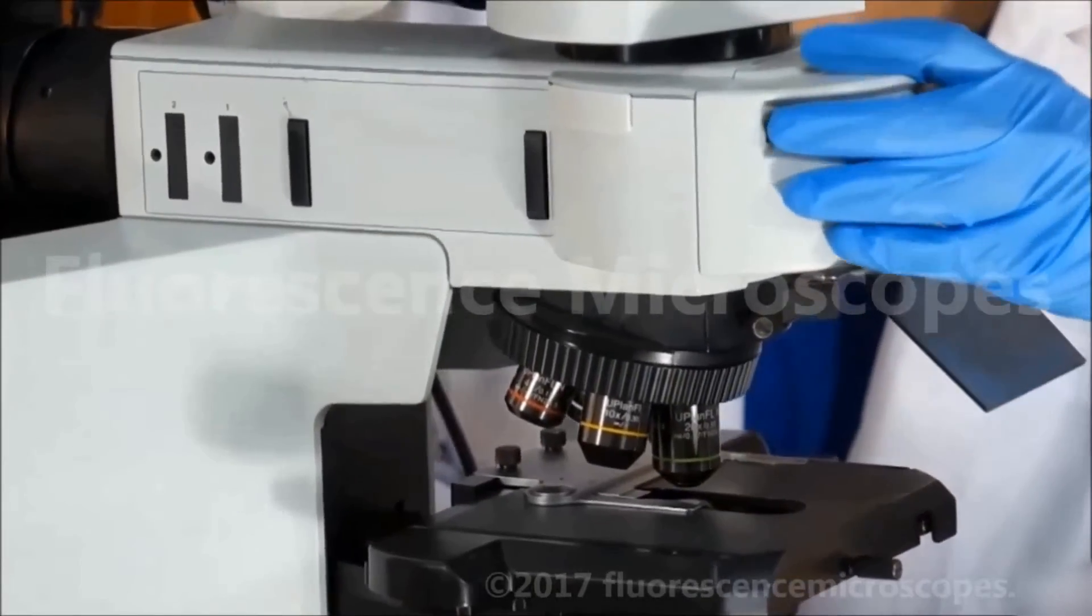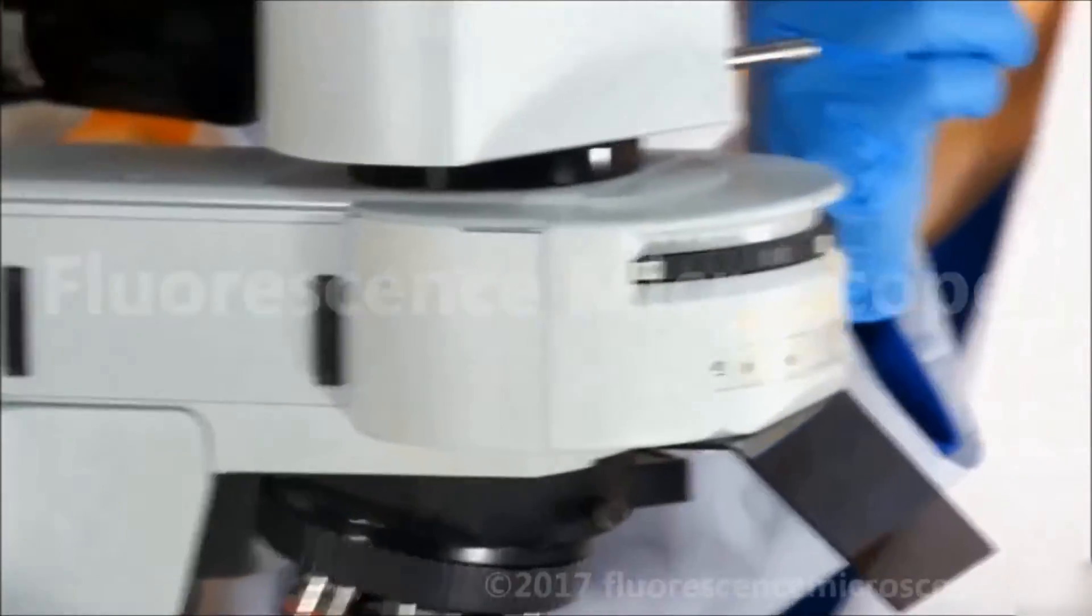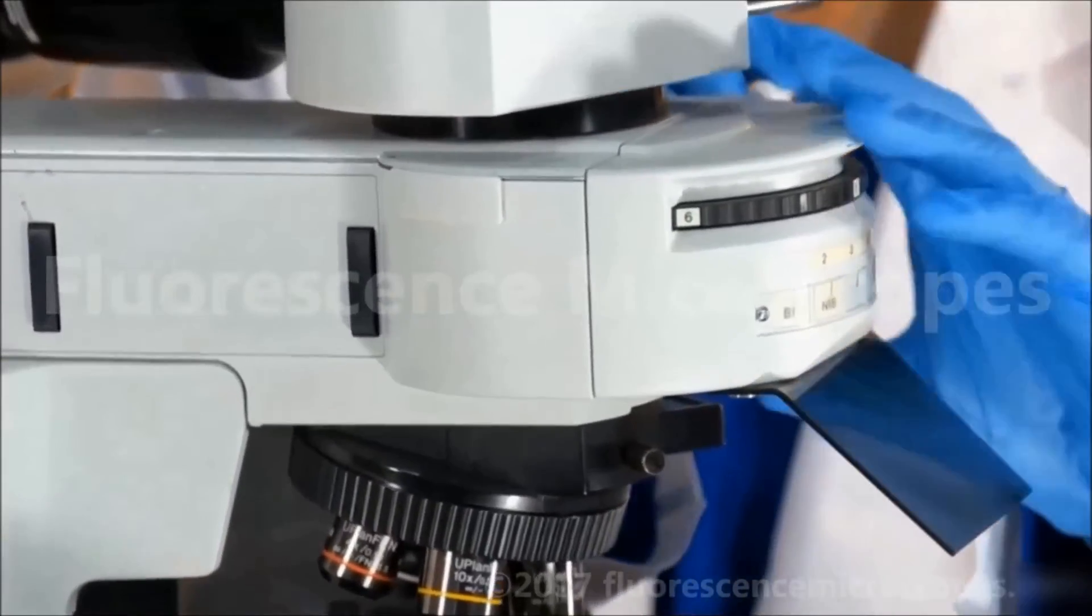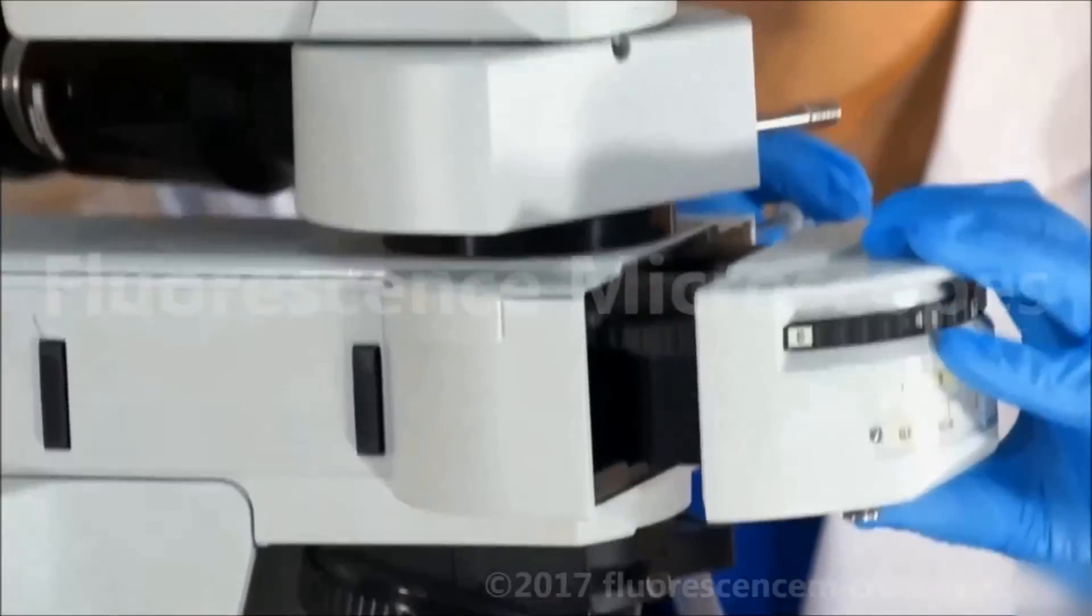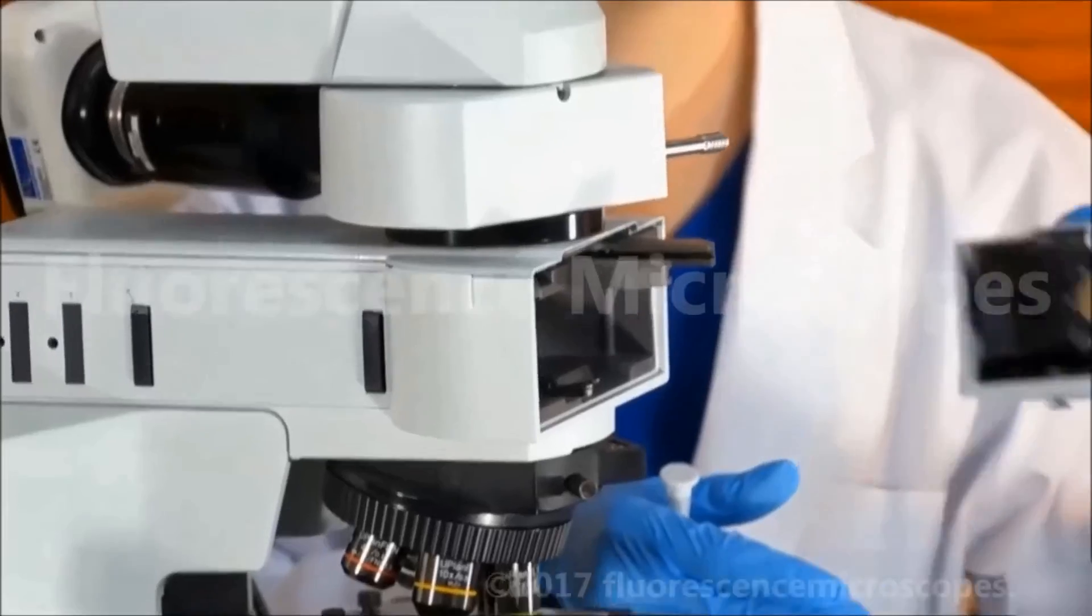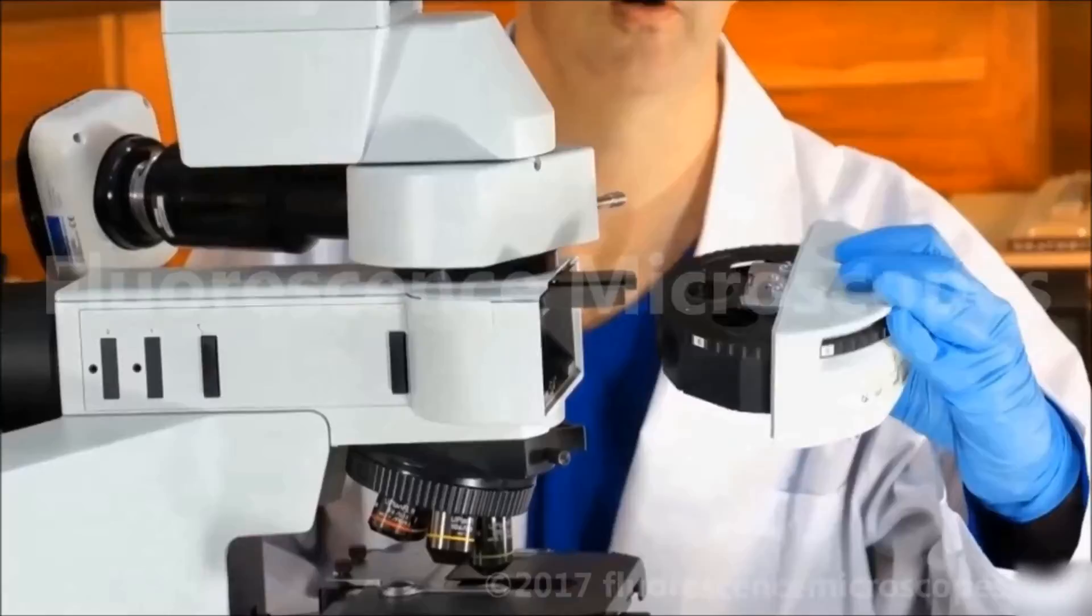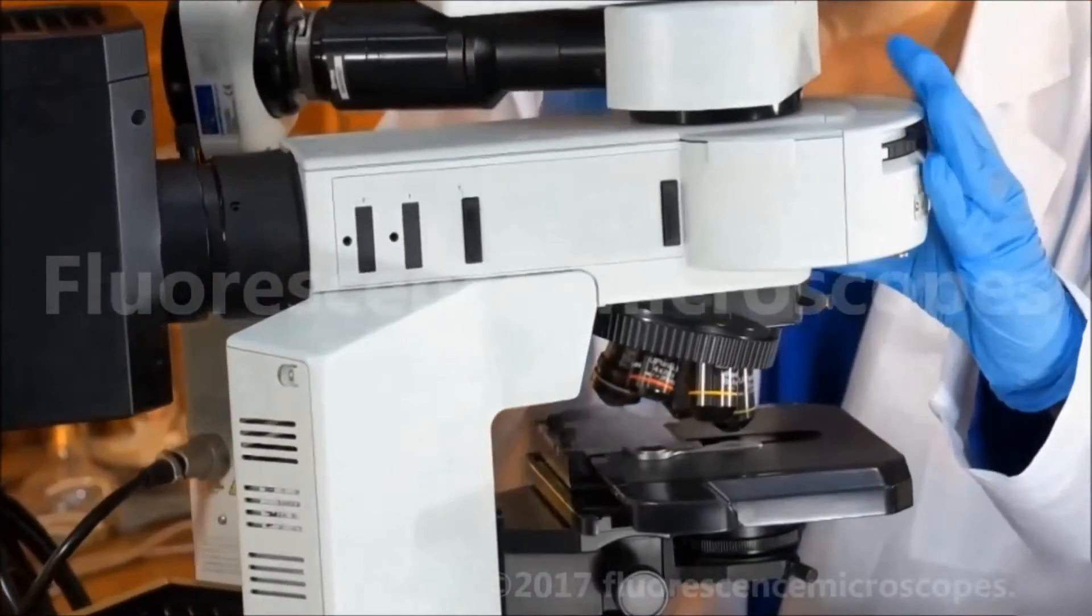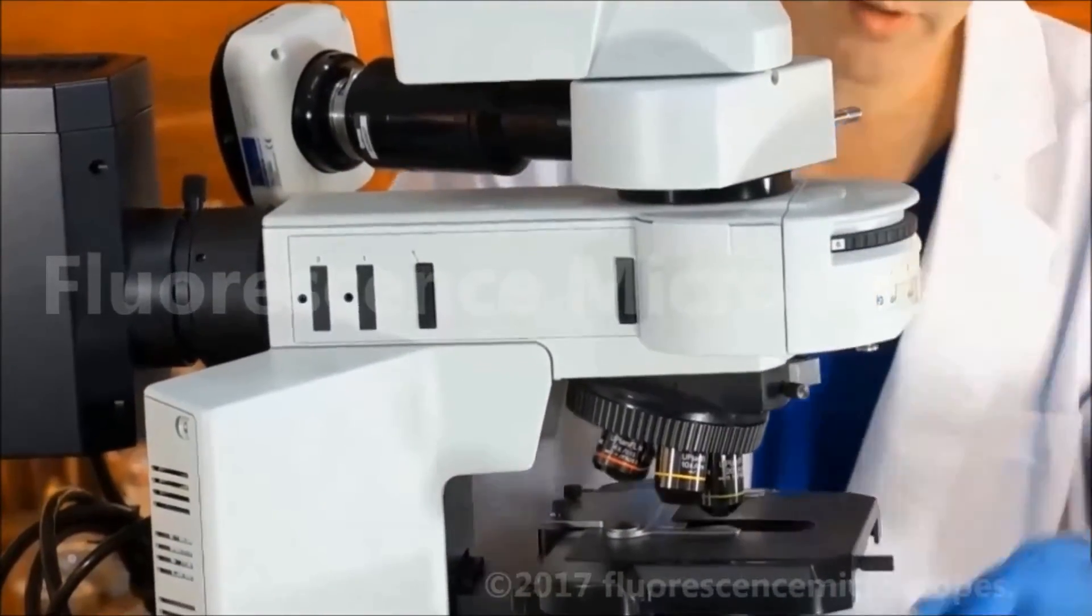The reflector turret is inside. I'll take the included 3mm hex island head wrench. This is an original Olympus. We can see what filters that we have. We can configure your filters however you may want. If you want other filters than what's included in the ad, just let us know. Everything is customizable.